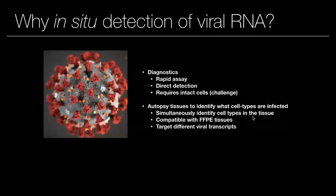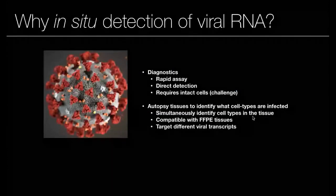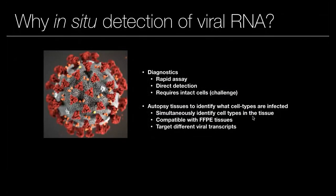The first application is diagnostics, based on the fact that RNA-FISH is really fast and a direct detection method. The other application we've been working with is looking in autopsy tissues to identify what cell types are actually getting infected. It doesn't necessarily have to be autopsy — it could also be biopsies or other preserved tissues from patients. In these assays, we can design probes that target the virus, but also probes targeting the host, allowing us to know what cell types are present and understand the host response to the virus — all simultaneously.